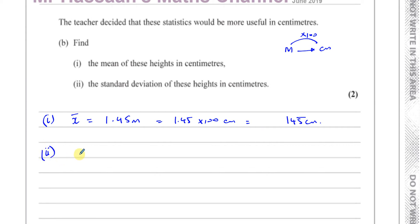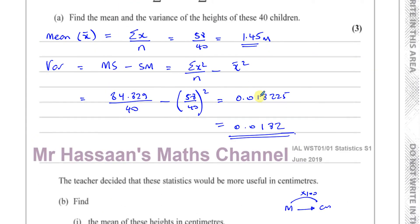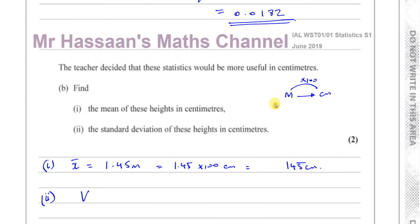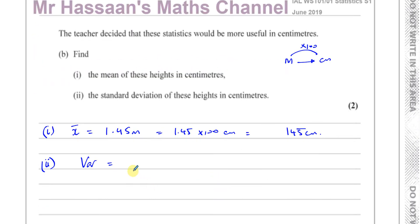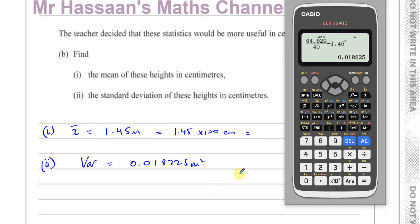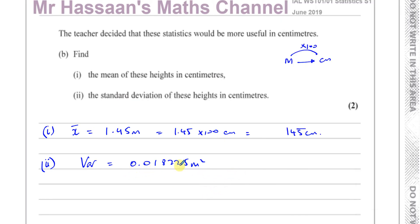Now we also need to find the standard deviation, so first let's find the variance. The variance is in squared units — it's actually in metres squared, because you square all the values. So the variance of 0.018225 is in metres squared, and I need to convert it into centimetres squared.